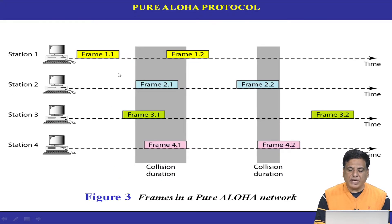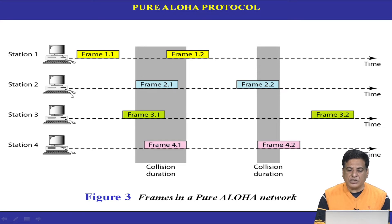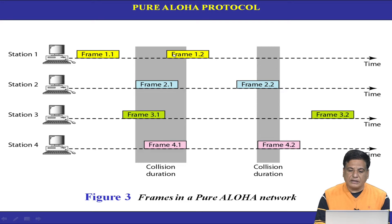In Pure ALOHA, we have four stations sending frames. The protocol states that when a station has a frame, it can send it immediately. Here we find that while station 1 is sending two frames — frame 1.1 and frame 1.2 — and station 2 is sending frame 2.1 and frame 2.2, frames 1.2, 2.1, 3.1, and 4.1 are colliding at the middle.